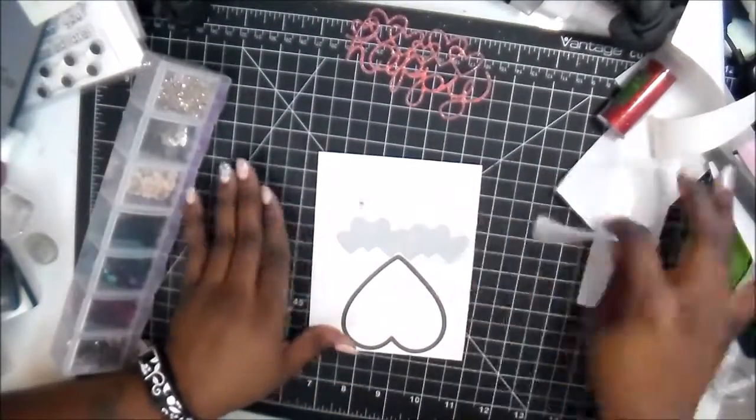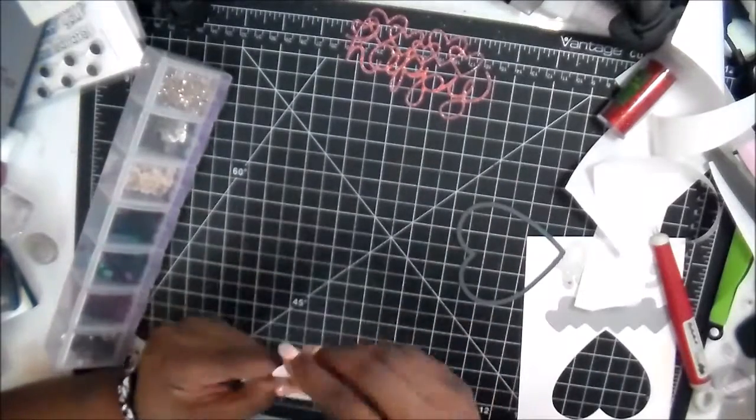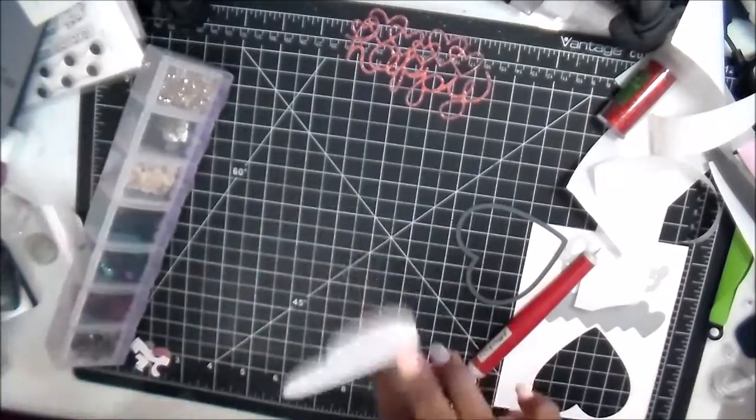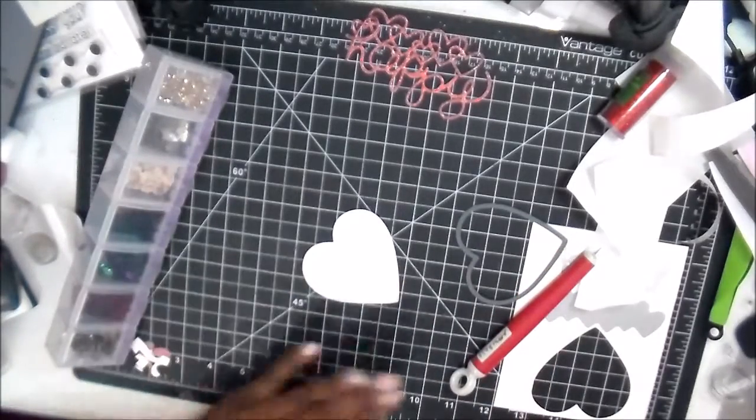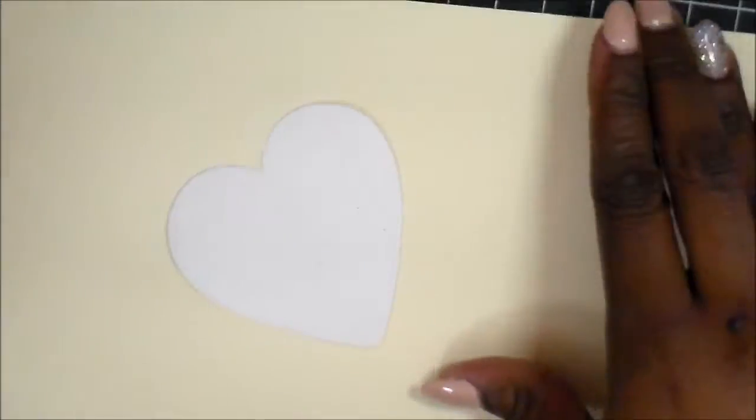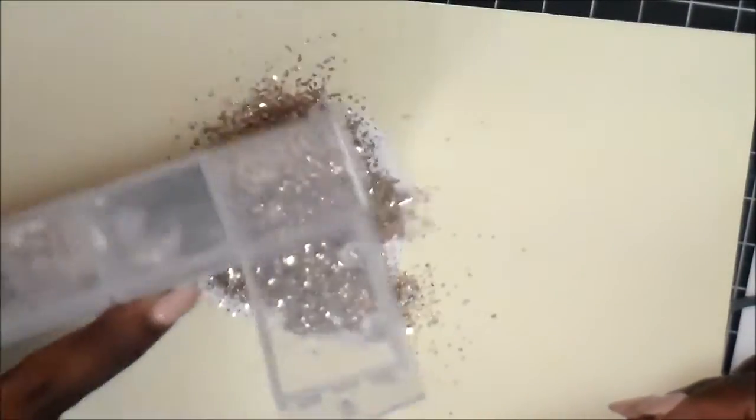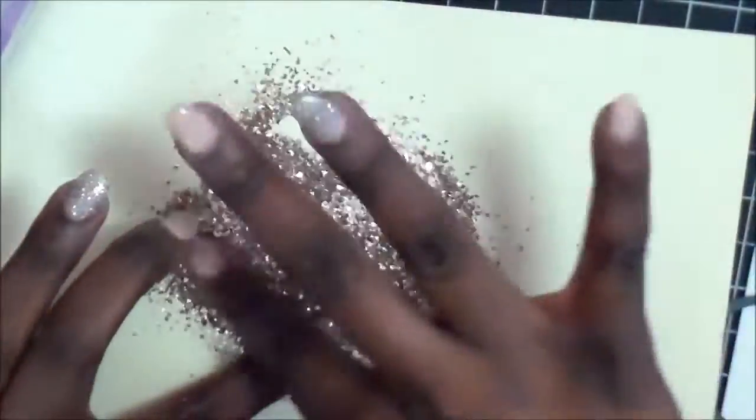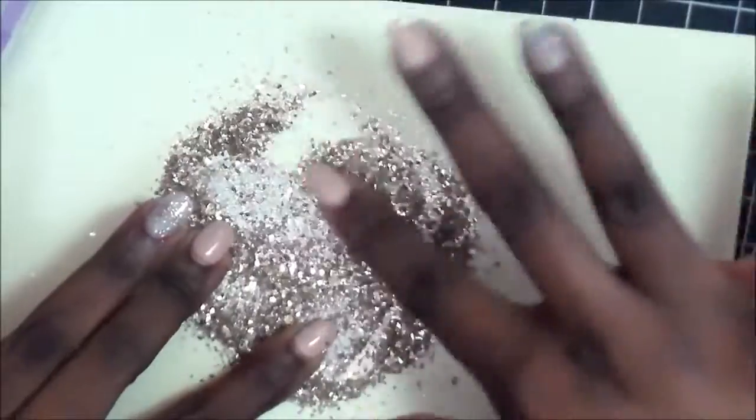I've already run it through the Cuttlebug, and so now I have a die-cut heart. Once again, I'm taking the top layer piece off—I still have the bottom stick-it—and I have a chunkier glitter.